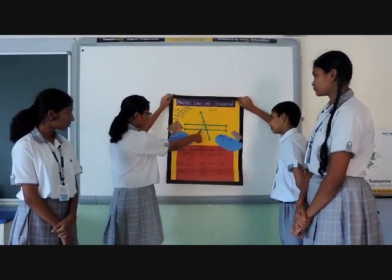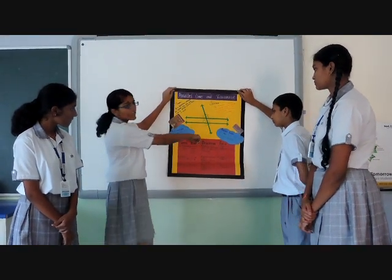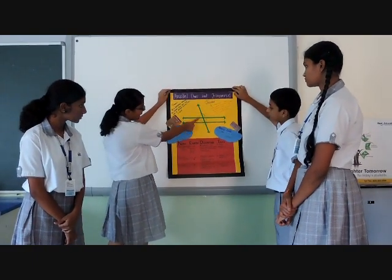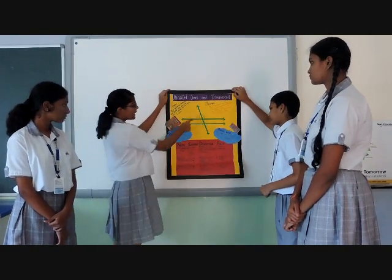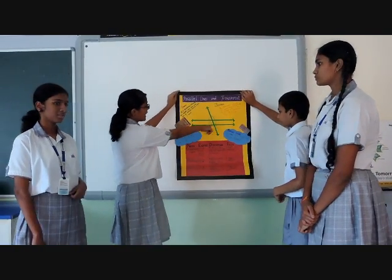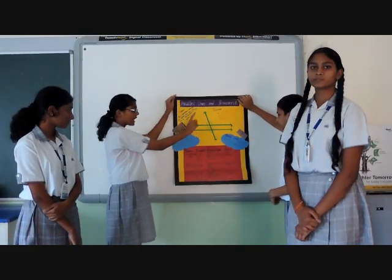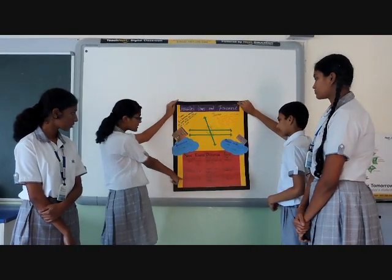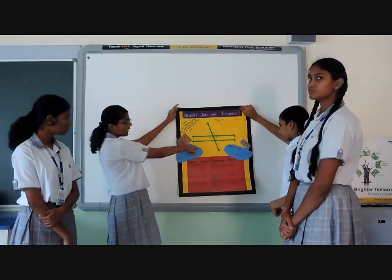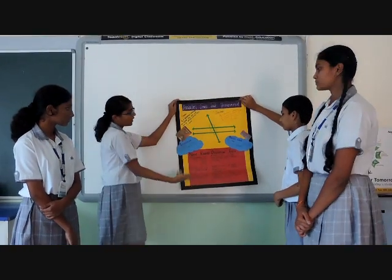Corresponding angles are angle 1 and angle 5, angle 2 and angle 6, angle 3 and angle 7, angle 4 and angle 8. They lie on the same spot when you slide up and down the transversal, and the fact is that they are all congruent. Alternate interior angles are angle 3 and angle 5, between the two parallel lines, and they are congruent. Alternate exterior angles are angle 1 and angle 7, angle 2 and angle 8, lying outside the parallel lines, and they are all congruent.